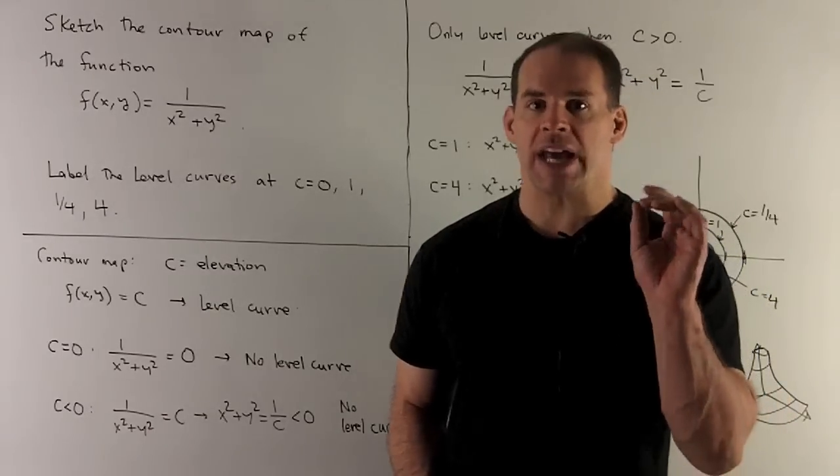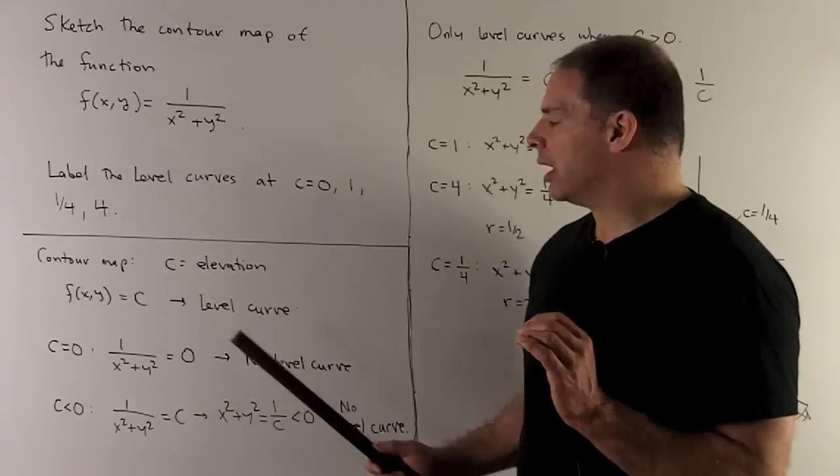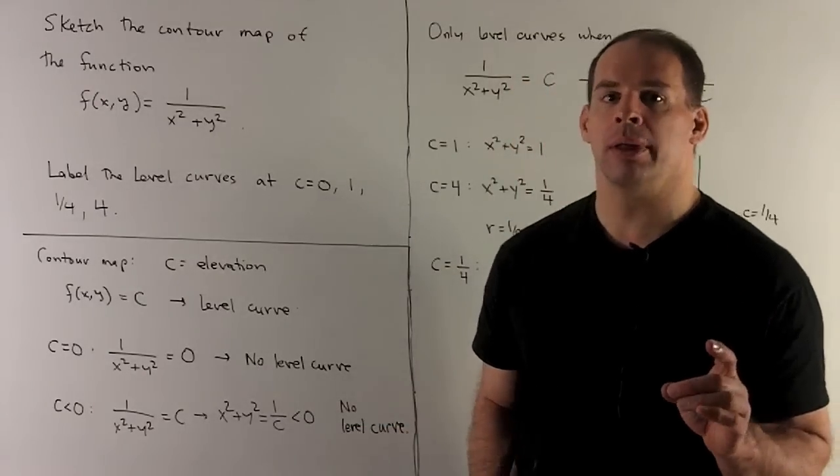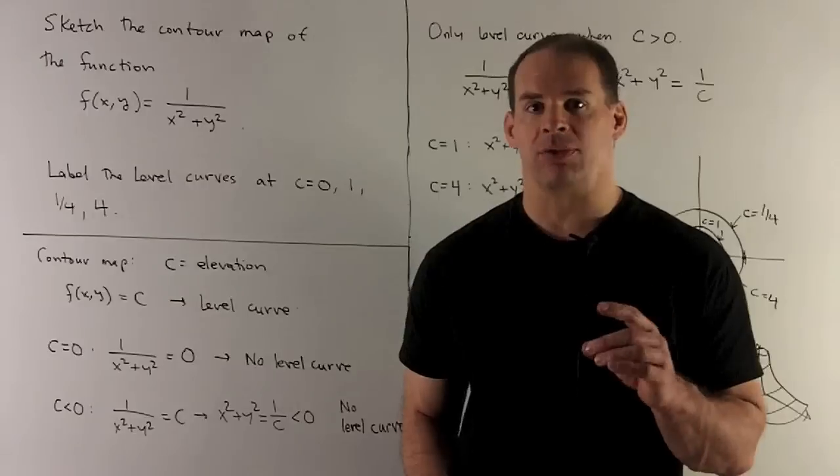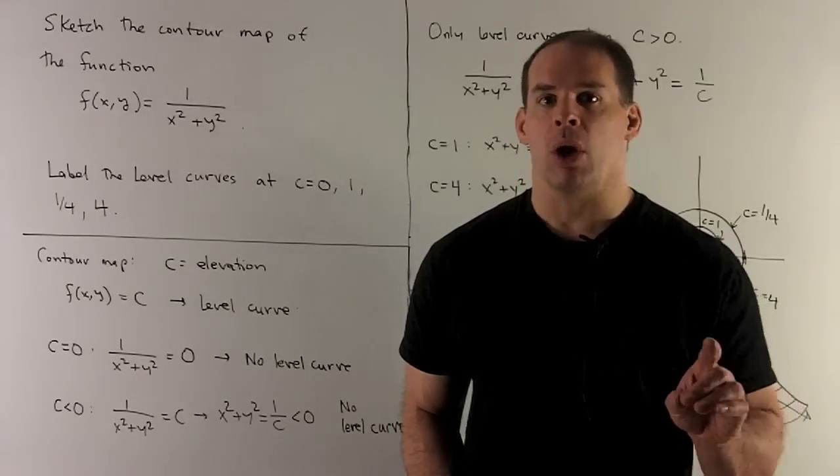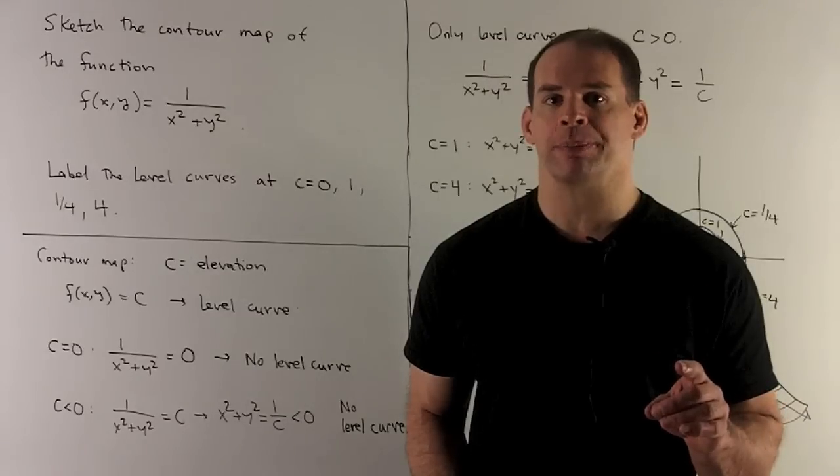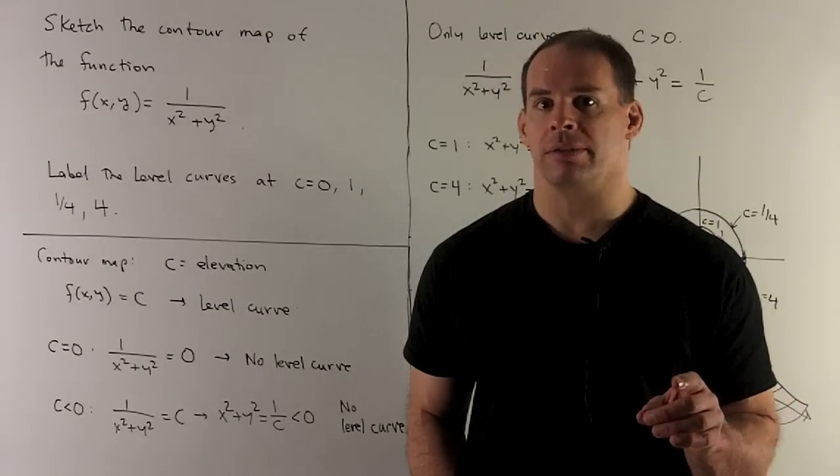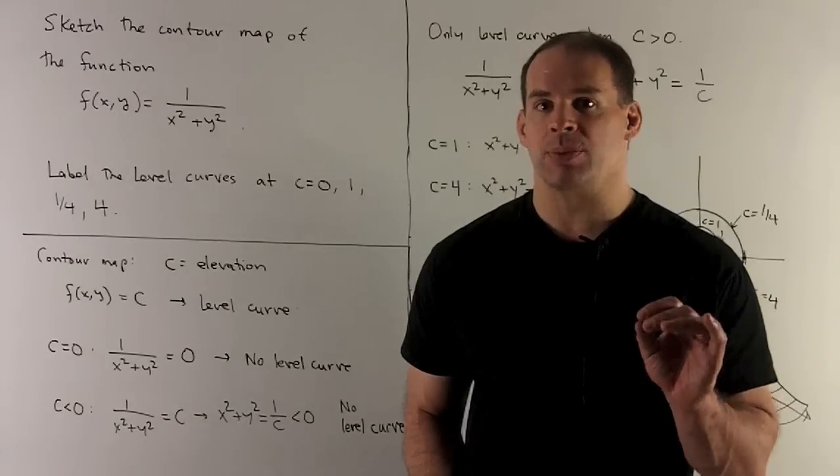If I try zero, what happens? I have 1/(x² + y²) = 0. Clear the denominator and I'm left with 0 = 1. So there's going to be no x and y that solve that equation. So c = 0, there's no level curve.